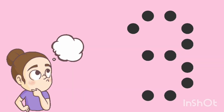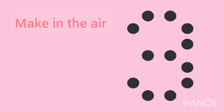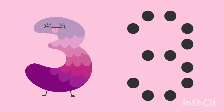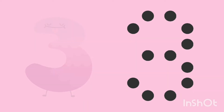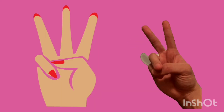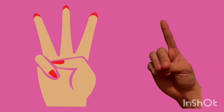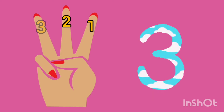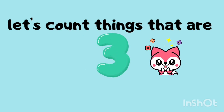Half around! Let's make it in the air. Follow the dots. You can also sing along: half around and half around to make the number three! Let's show three on our fingers — one finger, two fingers, three fingers. This is three.